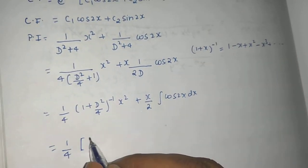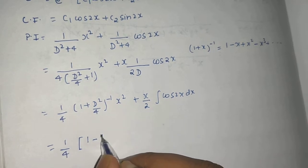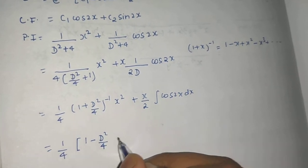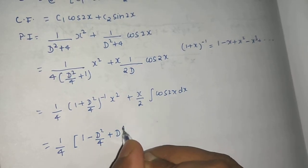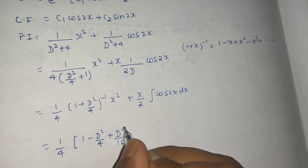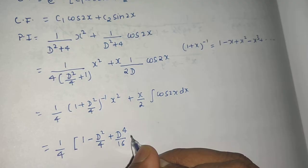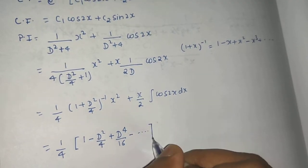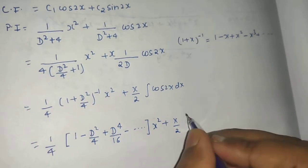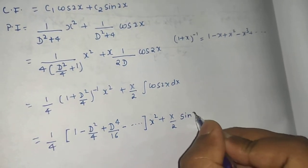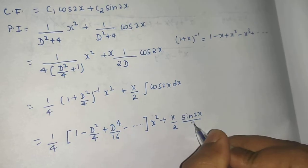So first term is 1 - x. So -D²/4 + x². So +D⁴/(4×16). Now this is 4th derivative no need to go further. So minus, leave that operating on x² plus (x/2). Integration of cos(2x) is sin(2x)/2.